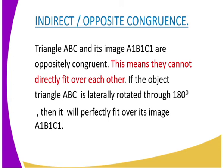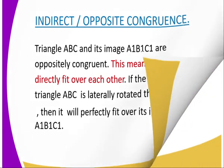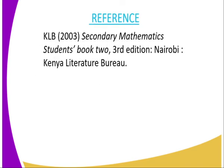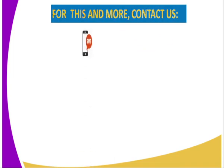We have come to the end of today's lesson. I'm going to close by giving you the following activity. Question one: define the following terms — roman one, direct congruence, and roman two, opposite or indirect congruence. For reference, you can refer to Secondary Mathematics Student Book Two, published by the Kenya Literature Bureau.